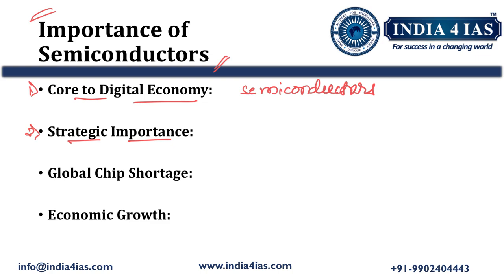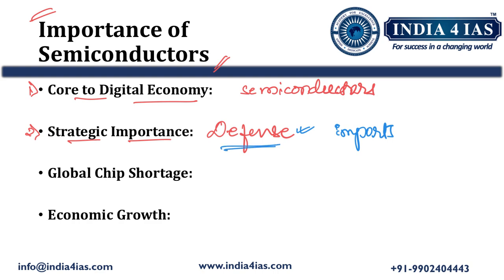The second importance is strategic importance. There are key sectors for national security and economic growth — defense, telecommunications, artificial intelligence and 5G technology. Most modern defense equipment is electronic, and India is dependent on imports for semiconductors and semiconductor chips. National security of India depends on defense. India is becoming a digital economy, and for telecommunications, AI and 5G, semiconductor chips are very essential. The economic growth of the nation depends on semiconductor chips directly or indirectly.